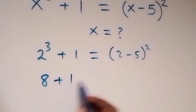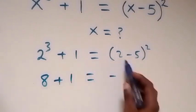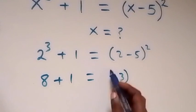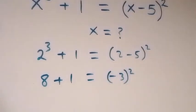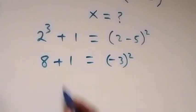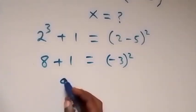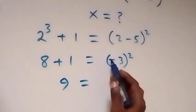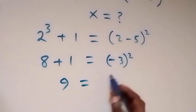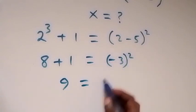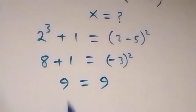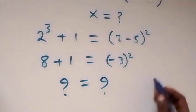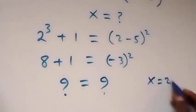Then 8 plus 1 equals to minus 3 squared. 8 plus 1 is 9, and minus 3 squared — since the exponent is even, this is positive — giving 3 times 3 which is 9. Left hand side equals right hand side, and hence x equals to 2 satisfies the given problem.